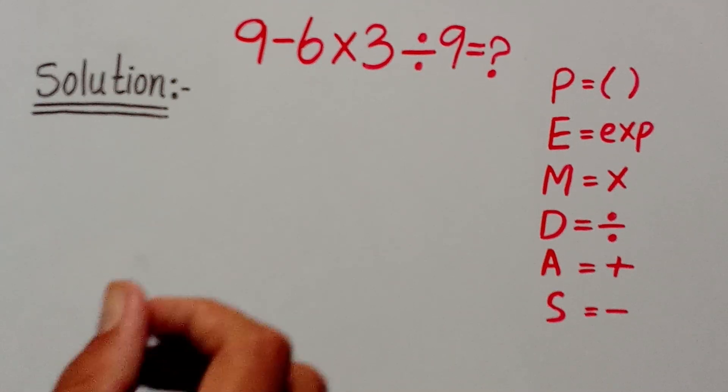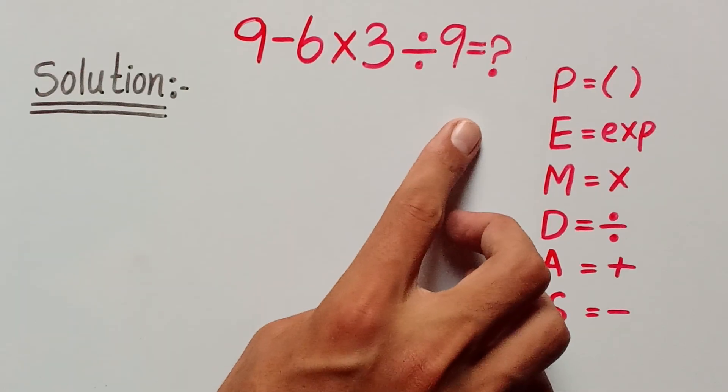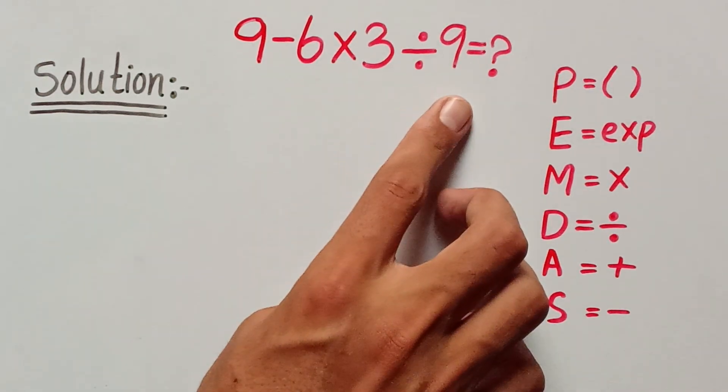Welcome to Logic Hub. In this video we are going to find the value of this simple math question: 9 minus 6 times 3 divided by 9.